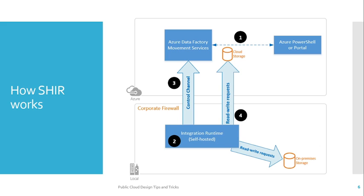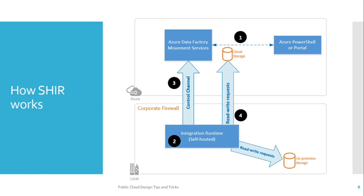Now let's understand a new feature recently published by Microsoft Azure, known as shared SHIR — that means shared self-hosted integration runtime. Consider large organizations that have multiple Data Factories for integration runtime activities or data copy activities from on-premise to Azure or Azure to on-premise. Previously, each Data Factory was linked to one SHIR. That means if you have 20 Data Factories doing these activities, you had to maintain 20 SHIRs on 20 different virtual machines. The maintenance overhead for the IT admin was drastically high. That is where the Microsoft team came up with the solution known as shared self-hosted integration runtime.